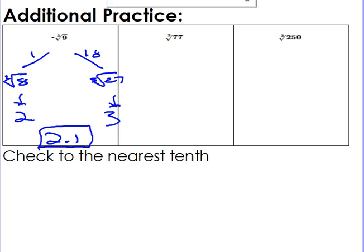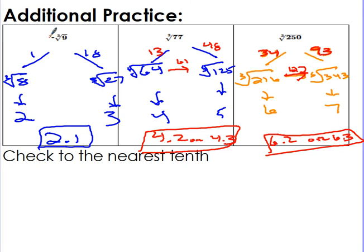Pause it and try the practice problems. For the cube root of 77: 77 is between the cube root of 64 (which is 4) and the cube root of 125 (which is 5), so it's 4-point-something. It's 13 away from 64 and 48 away from 125, so it's much closer to 64. That gives 13 over 61 total distance, meaning 4.2 or 4.3 are very reasonable estimations.